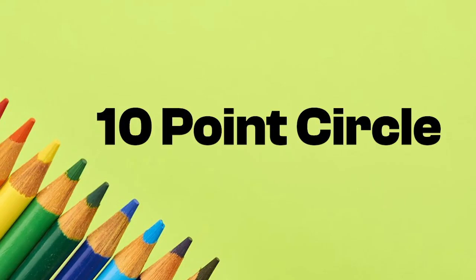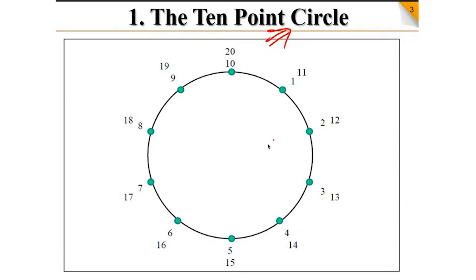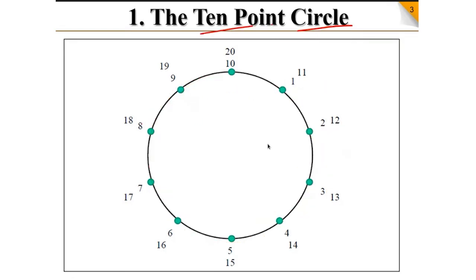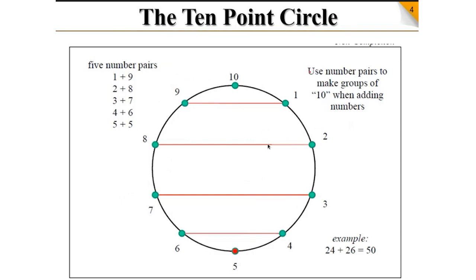This is called the 10-point circle. With this 10-point circle we are going to understand addition, subtraction, and multiplication. Today first we are going to understand addition. As the name suggests, there is a circle, and there are 10 points on the circle: 1 point, 2 point, 3 point, 4 point, 5 point, 6 point, 7 point, 8 point, 9 point, and 10.